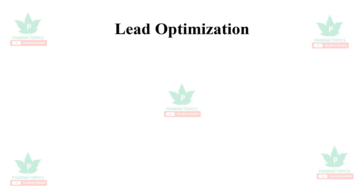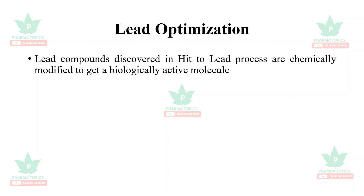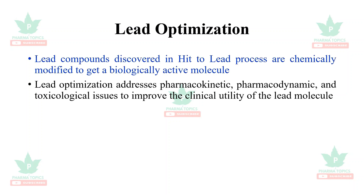Welcome to our Pharma Topics channel. Today's topic is lead optimization for M.Pharm principles of drug discovery. Lead compounds discovered in the hit-to-lead process are chemically modified to get a biologically active molecule — this is called lead optimization. Lead optimization addresses pharmacokinetic, pharmacodynamic, and toxicological issues to improve the clinical utility of the lead compound.